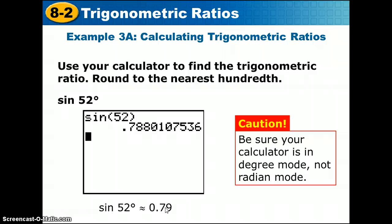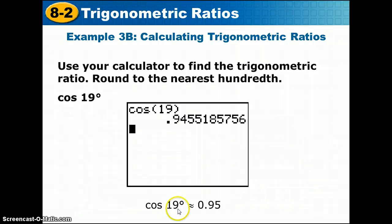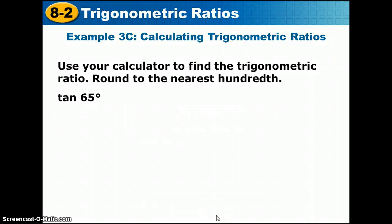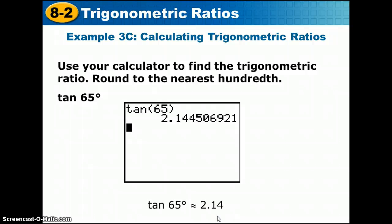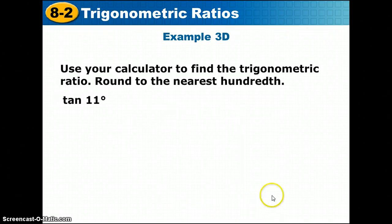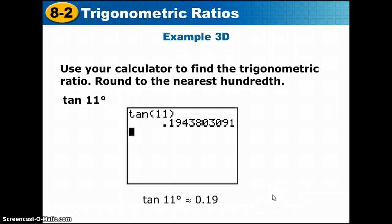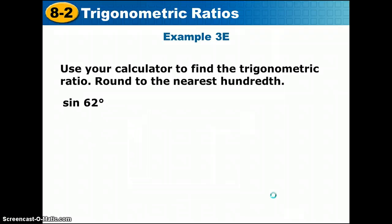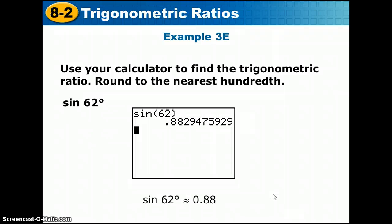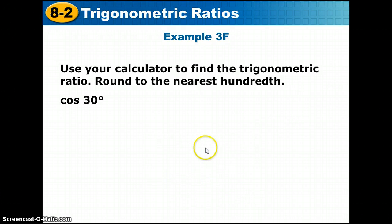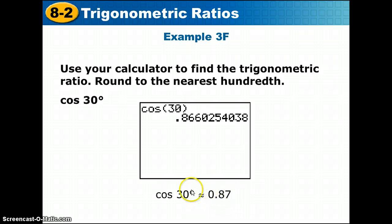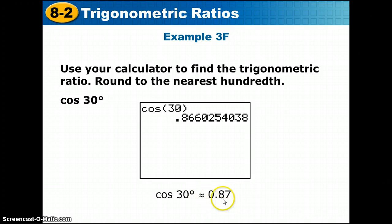If you need more time, pause the video before checking answers. Here are the results: cosine of 19° ≈ 0.95; tangent of 65° ≈ 2.14; tangent of 11° ≈ 0.19; sine of 62° ≈ 0.88; cosine of 30° ≈ 0.87. Note that cosine of 30° matches our earlier answer of √3/2 — if you compute √3 ÷ 2 on your calculator, you get the same decimal.